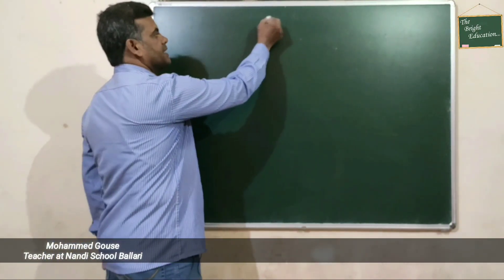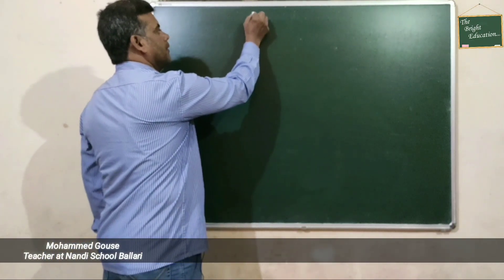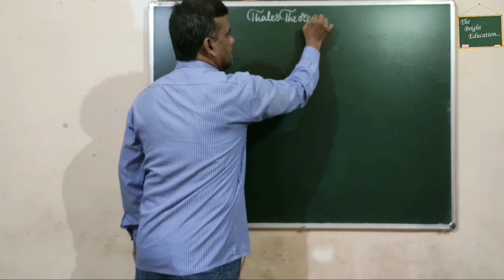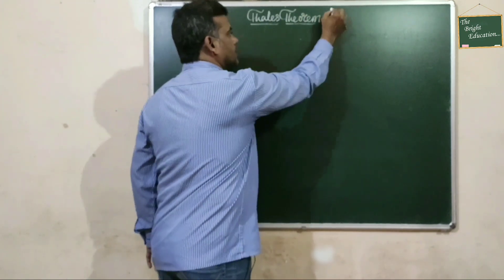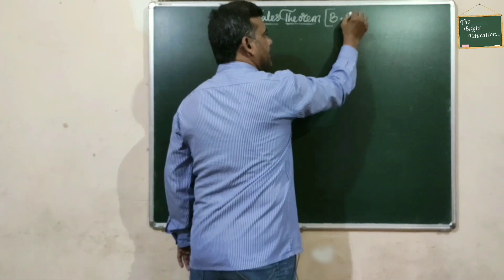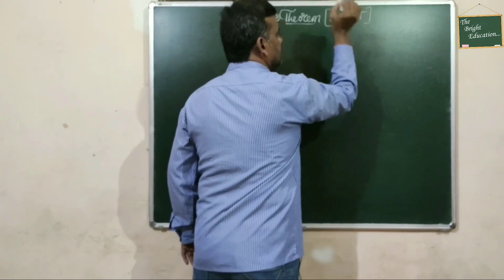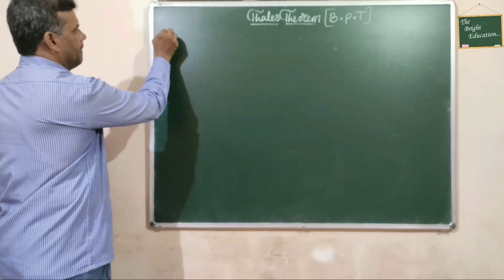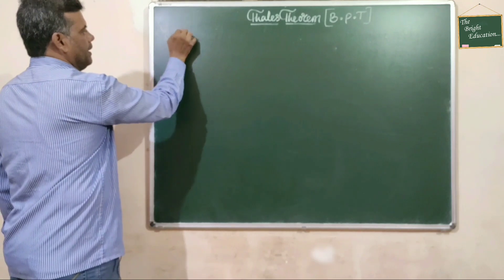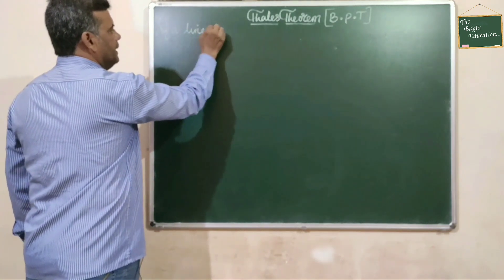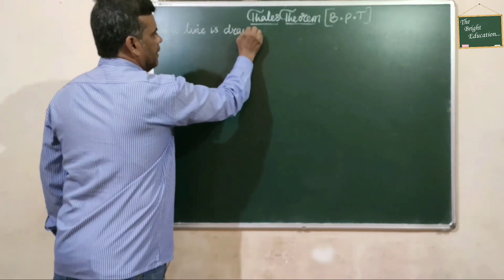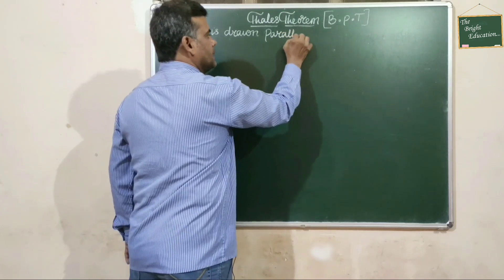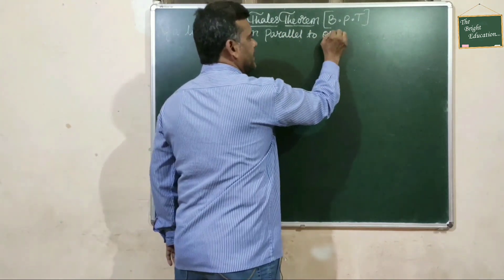We shall now learn Thales Theorem, also called BPT — Basic Proportionality Theorem. The statement is: if a line is drawn parallel to one side of a triangle, it divides the other two sides proportionally.